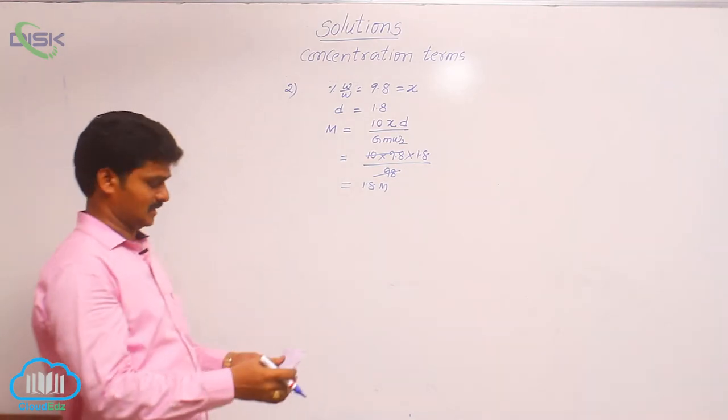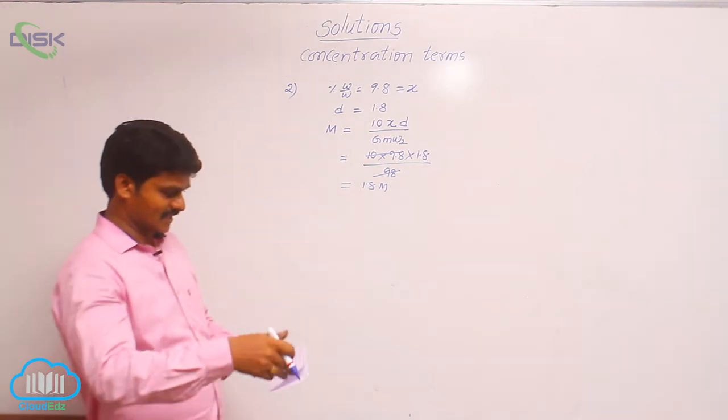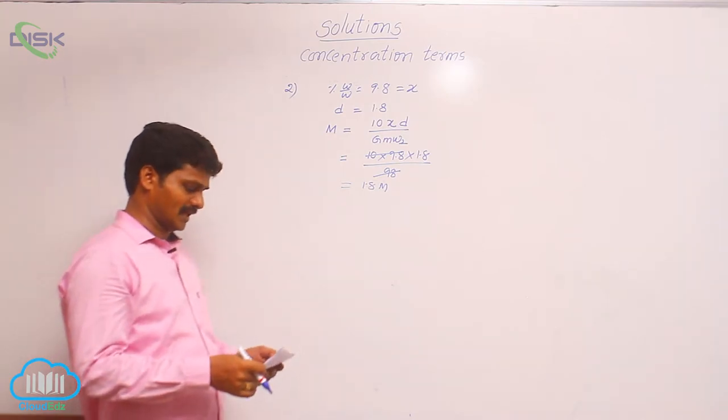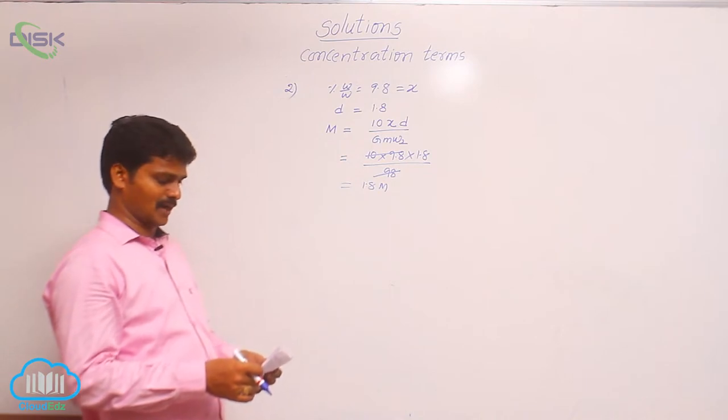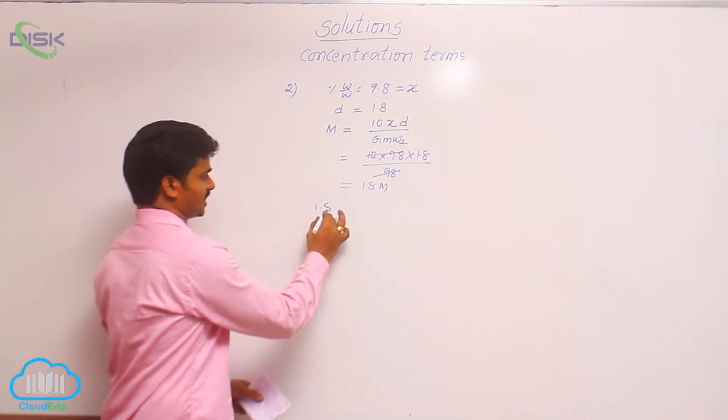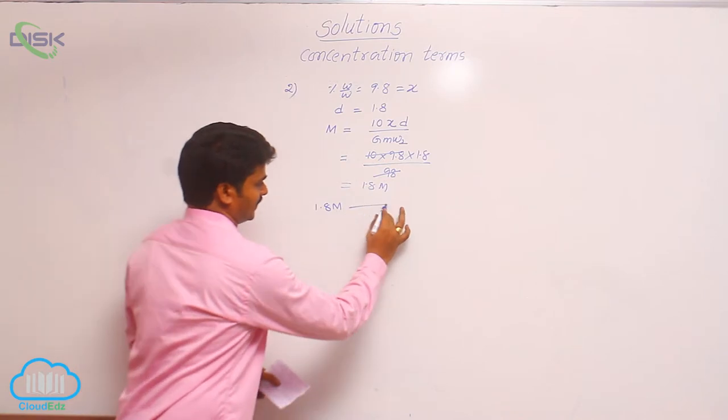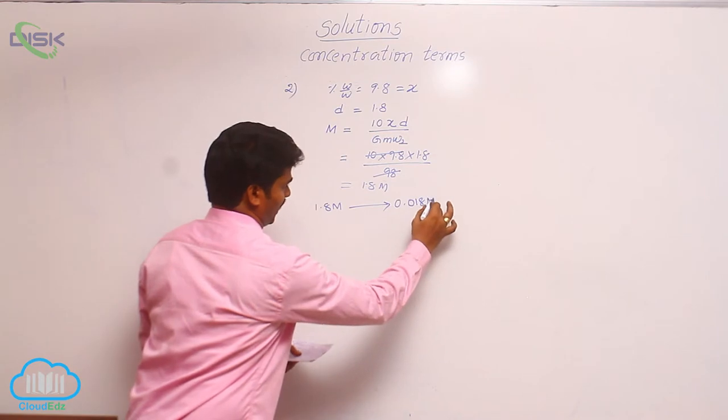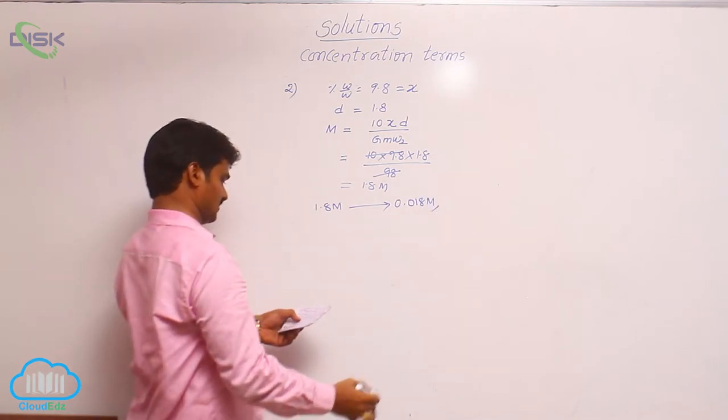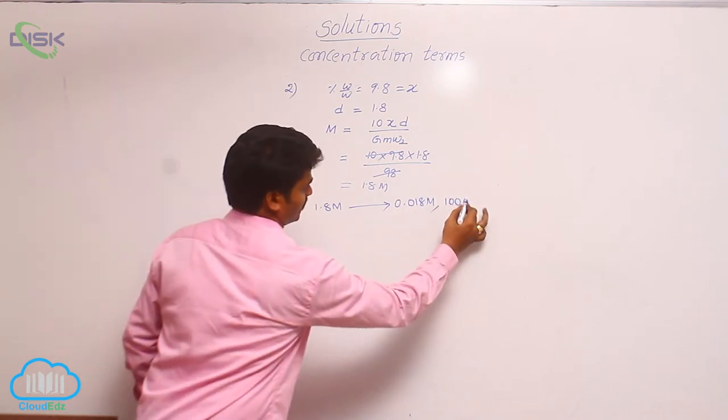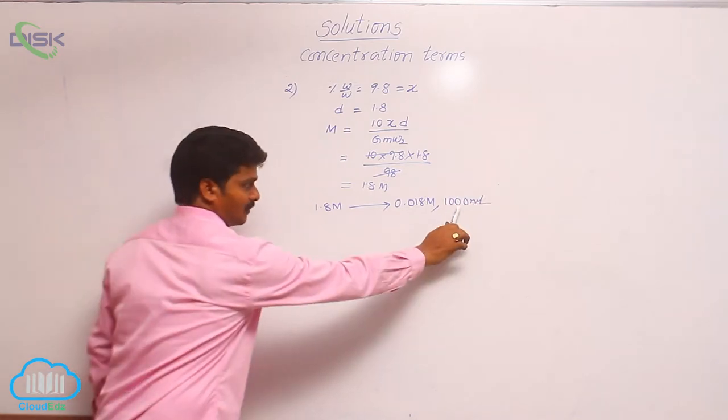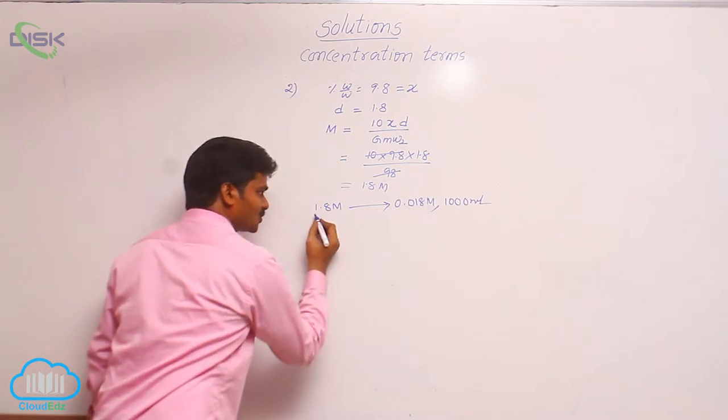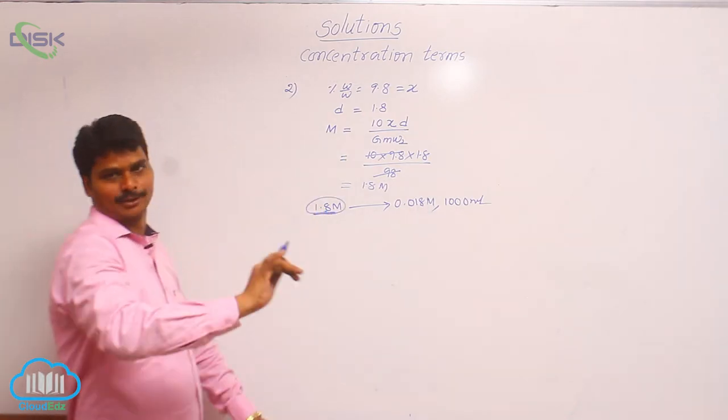But question is not completed here. See the remaining part of the question. The volume of the acid to be taken to prepare 1000 ml of 0.18 molar. That means, it is initially 1.8 molar. It is changed to 0.018 molar and solution volume is given 1000 ml. To make 1000 ml of 0.018 molar, how much volume of this concentration to be taken? That is the question.